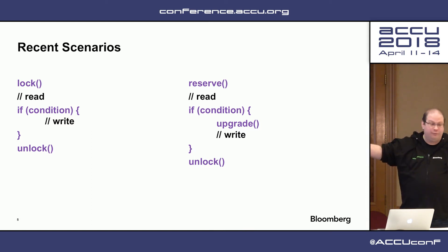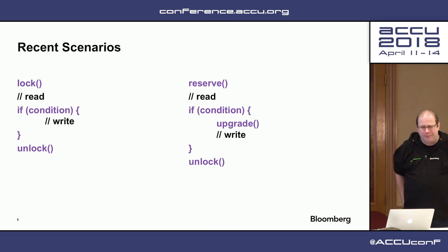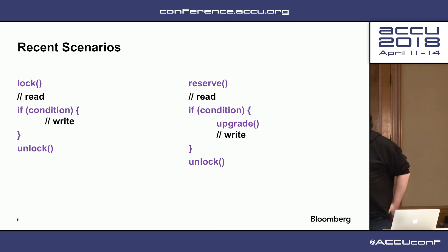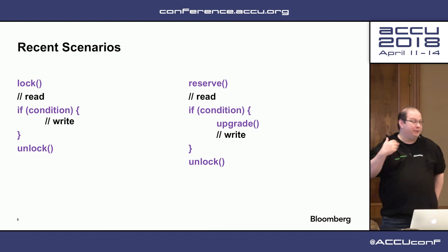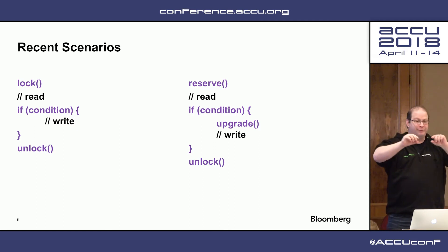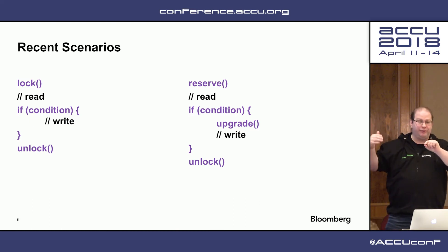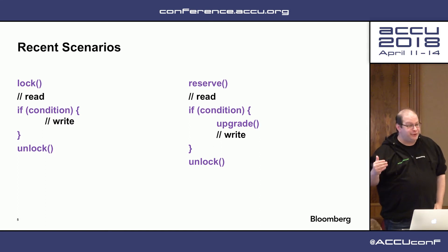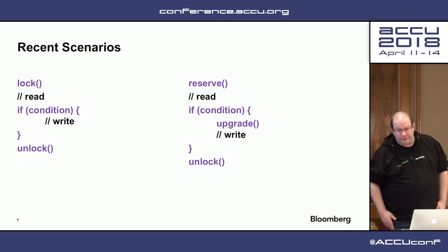Specifically, the overhead of the upgrade won't be charged to me if I don't go into the if statement, but that's really not the big savings. The potentially big savings is not slowing down the readers — allowing the writer to continue while the readers are going. The writer comes in, he reserves — that stops other writers from going past that point, but readers can still be reading. I then check the condition, and if I need to, I upgrade. That'll wait for all the readers to finish, and then I can do my work.